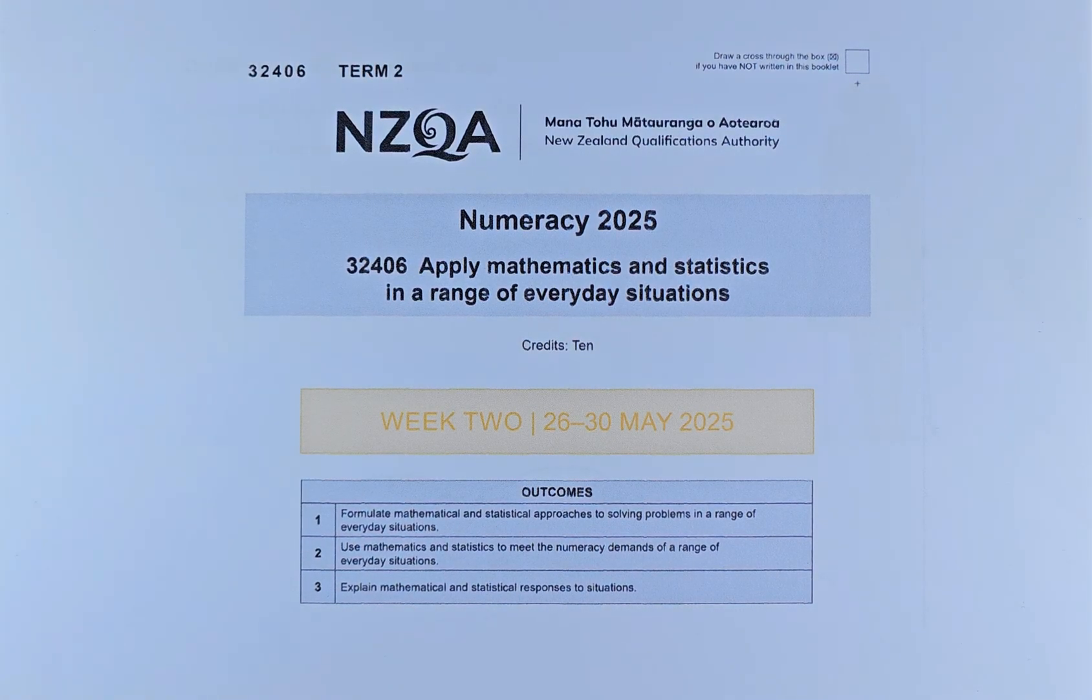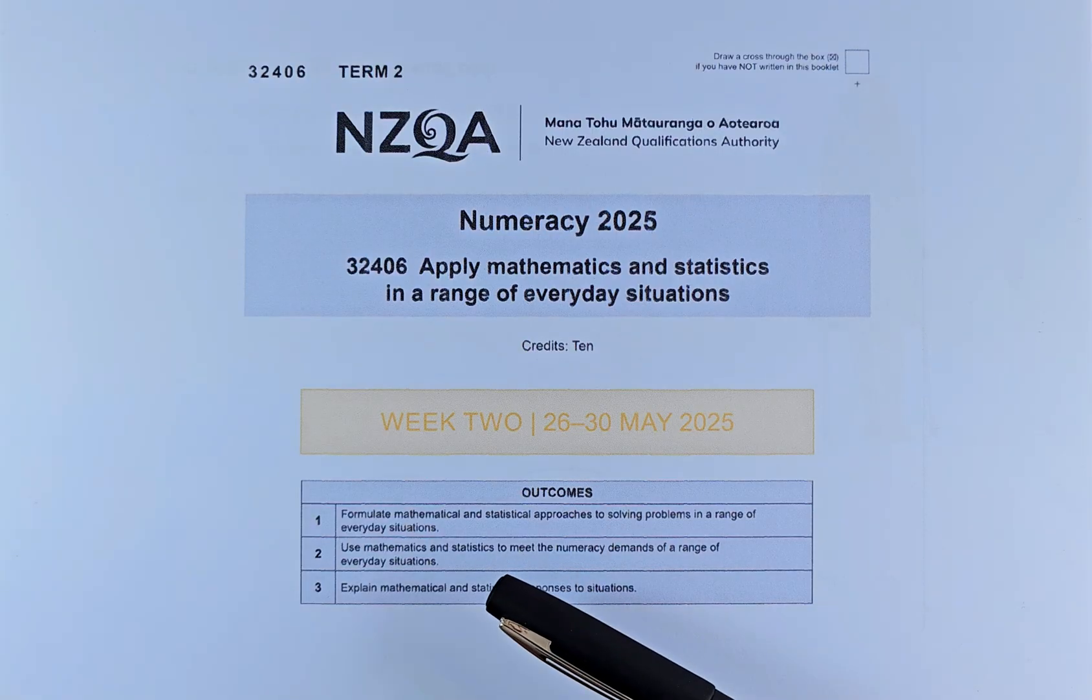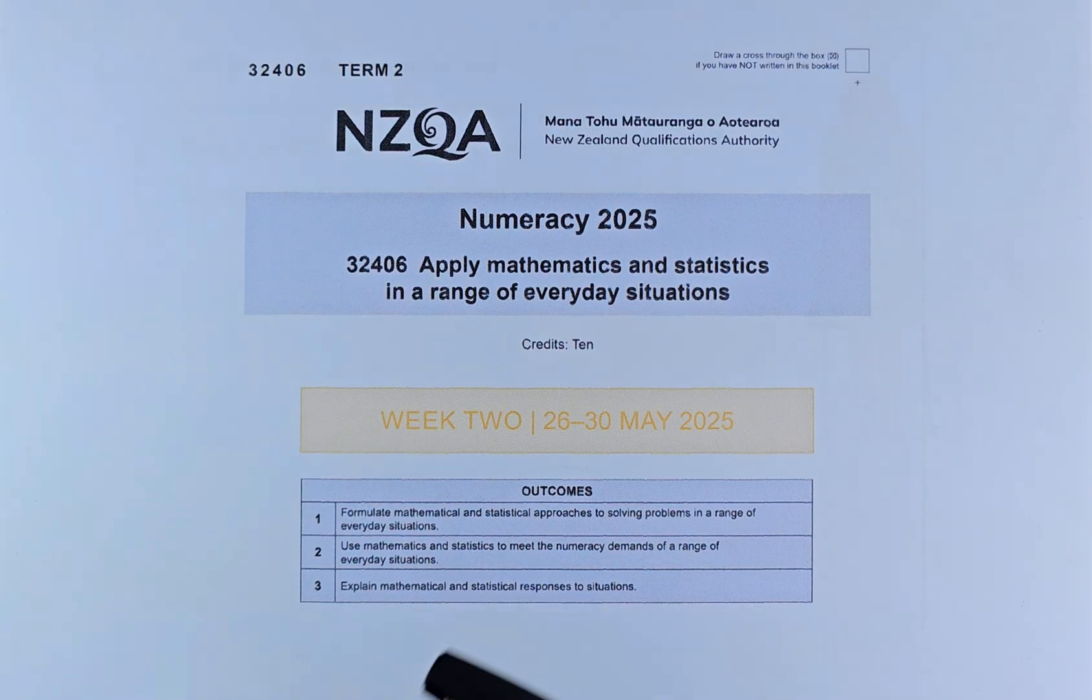Good day! In this video, we are going to try and solve question 1 of the 2025 term 2 numeracy paper, also called the CAA, and this is worth 10 credits. To get a 10 credit, you need to fulfill 3 outcomes: Outcome 1, 2 and 3. Every question has different outcomes. So you need to get a number of outcome 1, outcome 2 and outcome 3 in order to pass this numeracy exam paper. So without further ado, let's do question 1a.